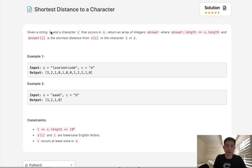Welcome to February's LeetCode Challenge. Today's problem is shortest distance to a character. Given a string S and a character C that occurs in S, return an array of integers where the length equals the length of the string and answer[i] is the shortest distance from S[i] to the character C in S.